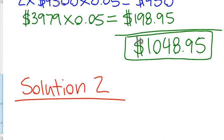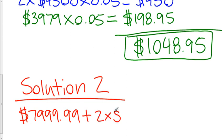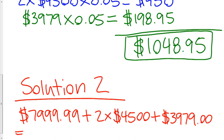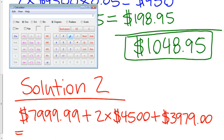So William has, his sales are $7,999.99, and he has two cars that he sold at $4,500 each, and then he sold another car for $3,979. So what does that give us for a total?